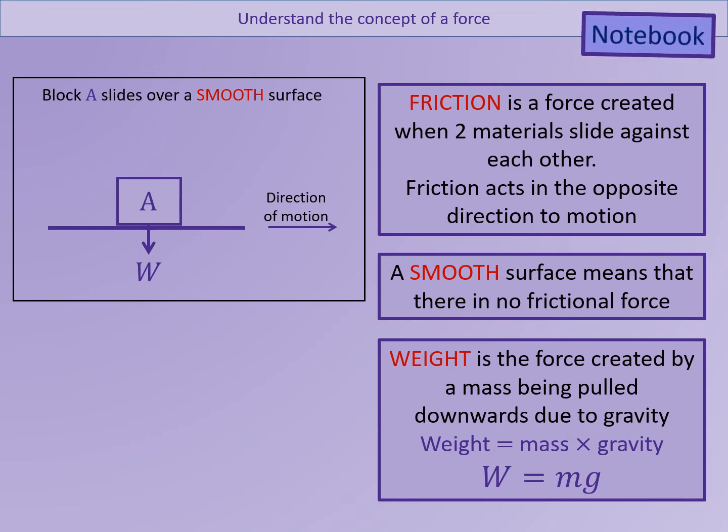An object's weight is the force that is created by its mass pulling it downwards due to gravity. Weight is calculated using this formula: weight equals mass times the acceleration due to gravity, or for short, W equals mg. Although in everyday language we tend to interchange weight and mass and use them as the same thing, in mechanics we have to be careful. Mass is measured in kilograms, whereas weight is a force that is measured in newtons.